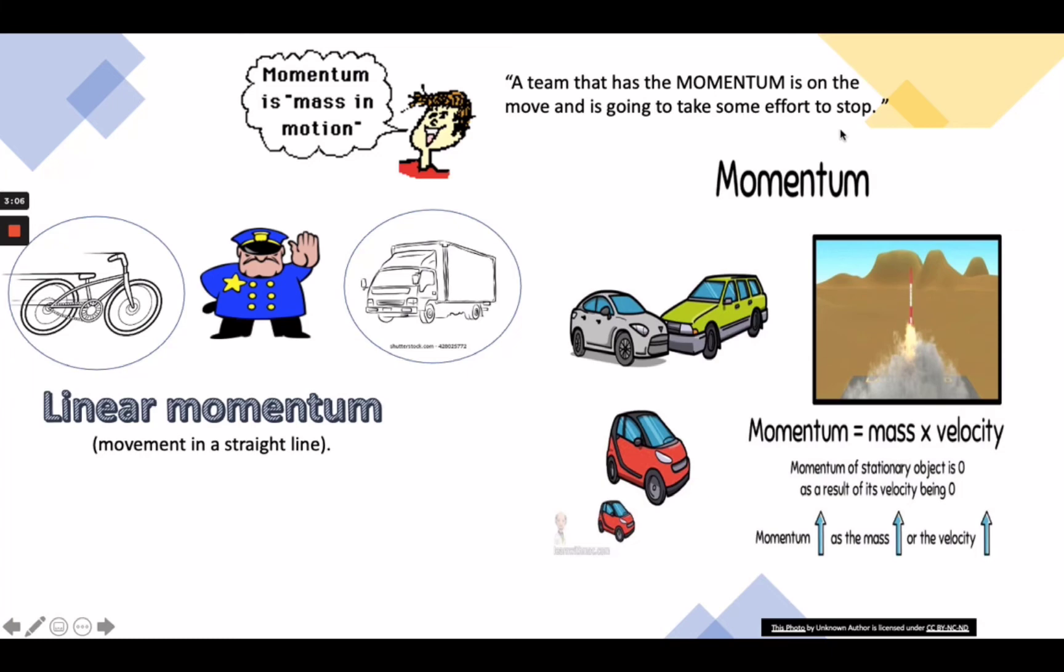Momentum depends upon the variables mass and velocity. In terms of an equation, the momentum of an object is equal to the mass of an object times the velocity of the object. In physics, the symbol for the quantity momentum is the lowercase p. Thus the equation can be written as p equals m times v. The standard metric unit of momentum is kilogram meter per second. If we look at the relationship of momentum, it is directly proportional to mass and velocity. Therefore, if momentum increases, its mass and velocity also increase. Remember that if an object is not moving, it has no momentum.